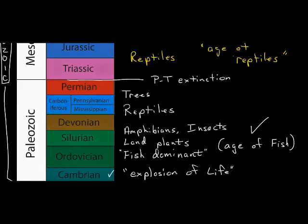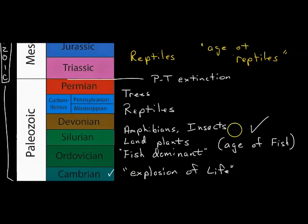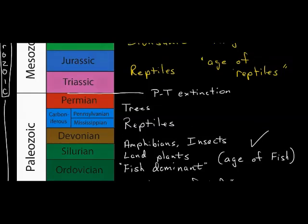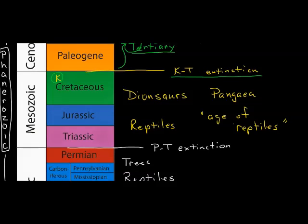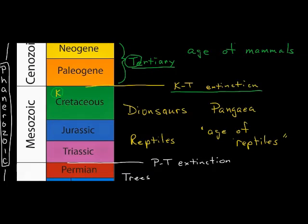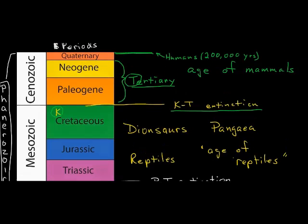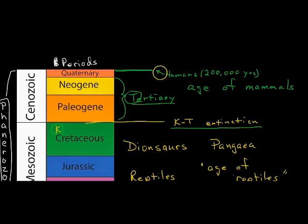To review quickly: we get the Cambrian explosion of life, which was fish-dominant, and it's also the time when we get amphibians, insects, and reptiles. Then we get the Mesozoic — the age of the dinosaurs — when Pangea formed and broke apart, ending with the K-T extinction. Finally, we get to the Cenozoic era with the age of mammals and the presence of humans at the very end of the time scale, since we are brand new to the planet.